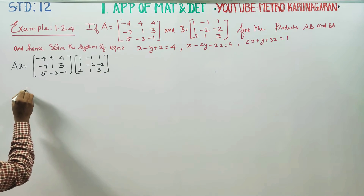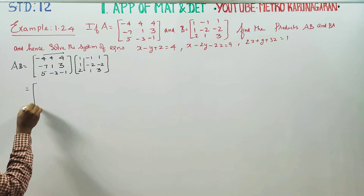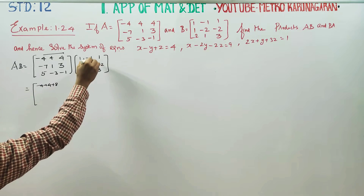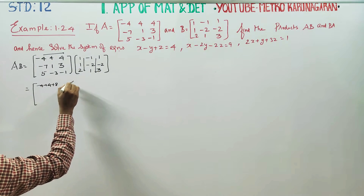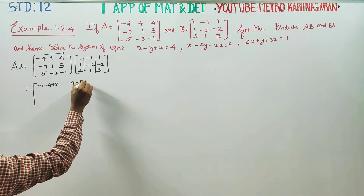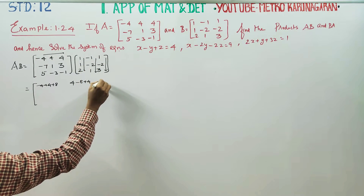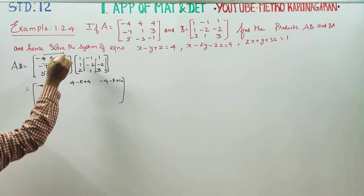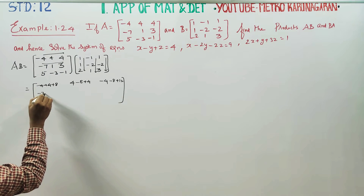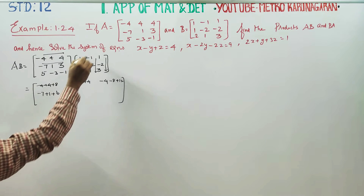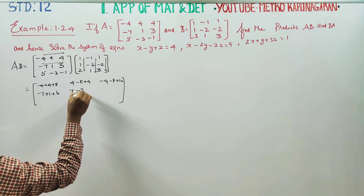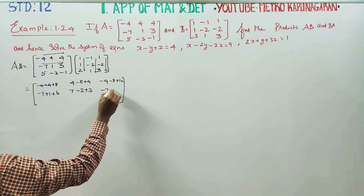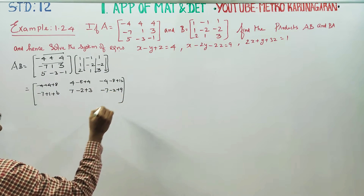Therefore, row into column. Now I am going to start my product. Minus 4 into 1 is minus 4, and 4 ones are 4, again 4 twos are 8. Next column: minus into minus plus 4, and minus 8, and plus 4. Last column: minus 4, minus 8, 4, 3s are 12. Second row, first column: minus 7, plus 1, 3, 2s are 6. And the column: minus into minus plus 7, minus 2, plus 3. And the last column: minus 7, 1 into minus 2 is minus 2, 3, 3s are 9.